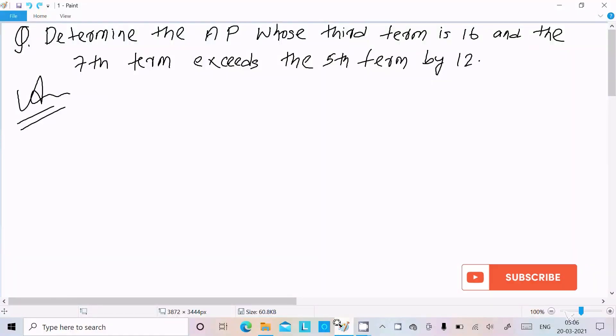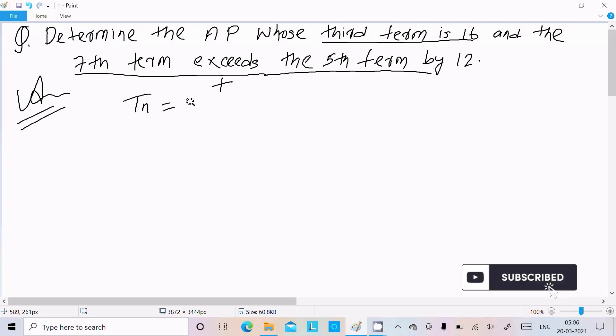Hello friends, in this video lecture I am going to determine the AP whose third term is 16 and the seventh term exceeds the fifth term by 12. When you get a message like 'exceeds', you need to use plus. Let's write the nth term formula: nth term is a plus n minus 1 into d, where a is the first term, d is the common difference, and n is the nth term.